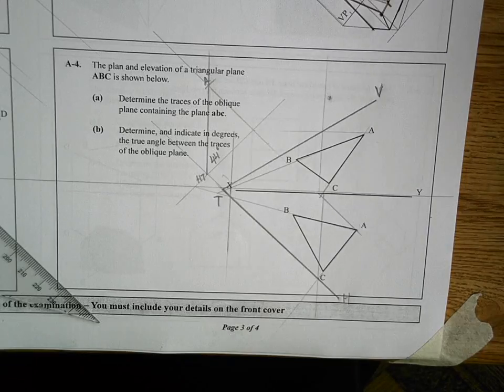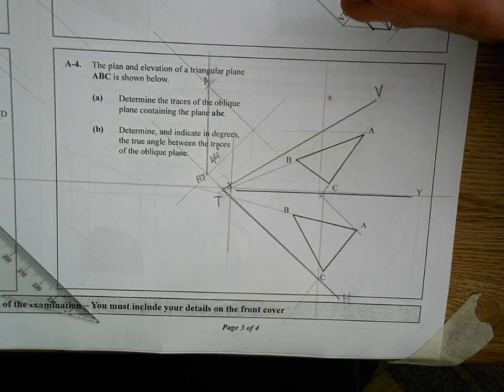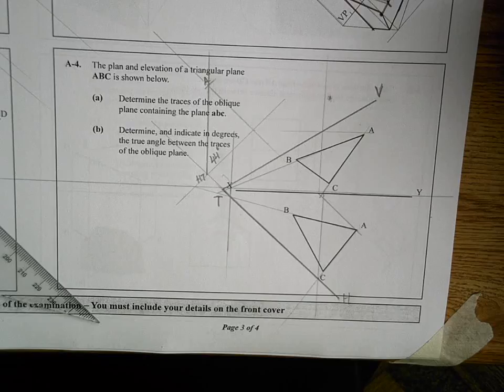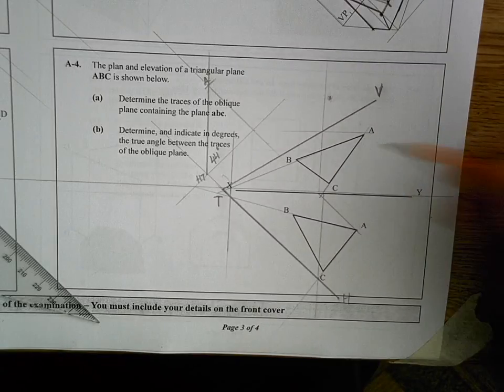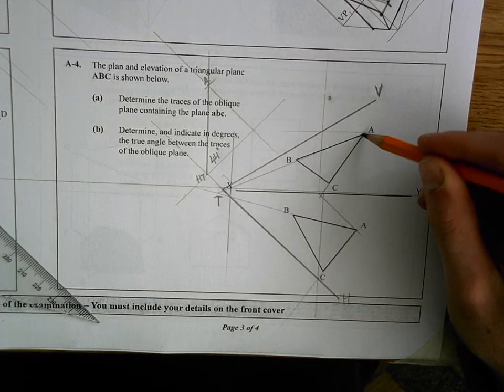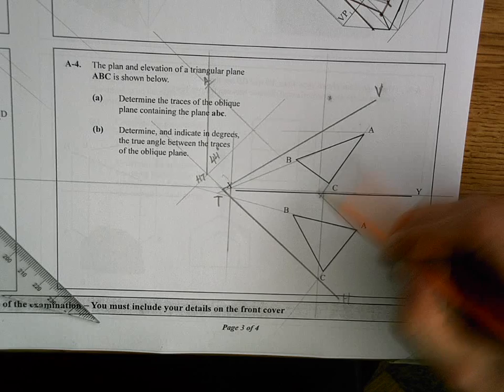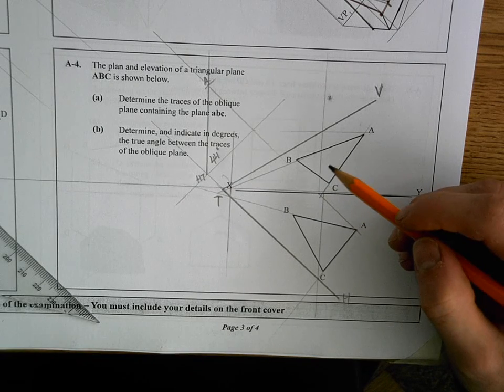Now, we don't have two points on the ground because A, B and C are all above the zero line. But what we can do is we can go to the apex of our shape, the highest point, which is A, and we can look down through those points until they do hit the ground.